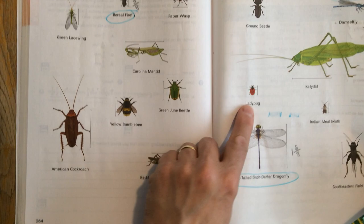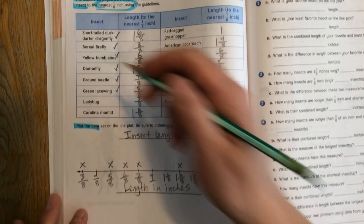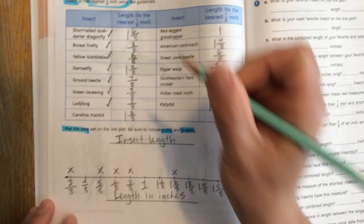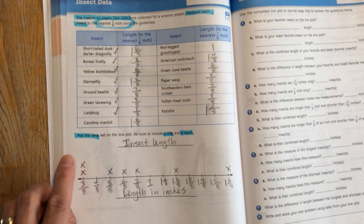The ladybug pictured right here is the same length as the boreal firefly. It's 3 eighths of an inch. So what I'm going to do here is when I check off that insect measurement, I'm going to put the x in the same spot, but I'm going to stack my x's. So now I know that there are at least two insects that same length.